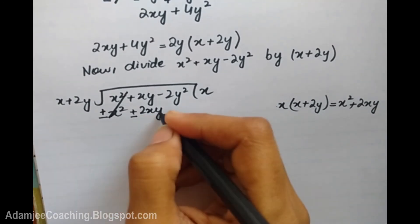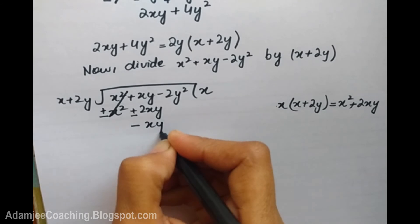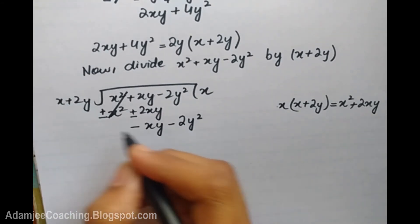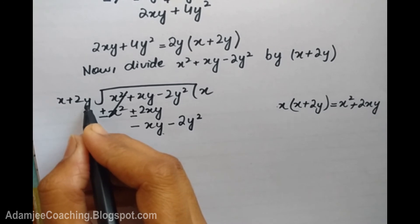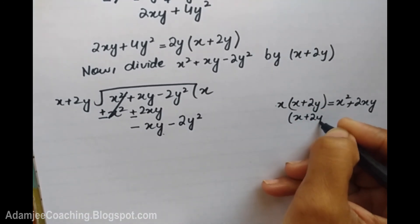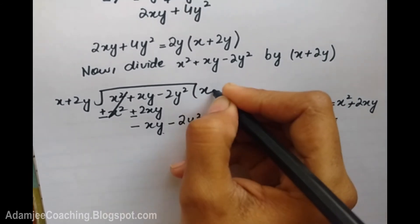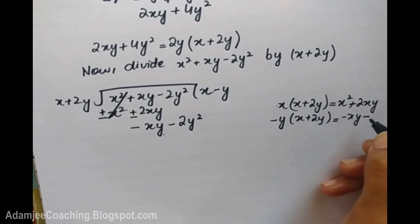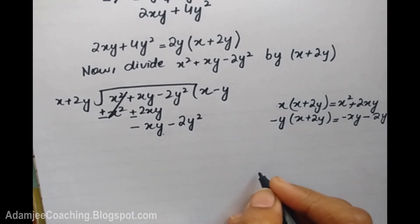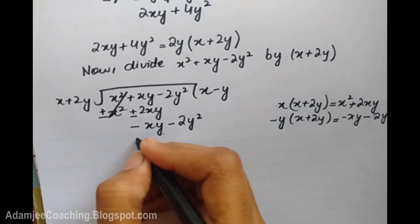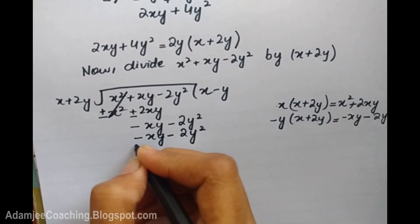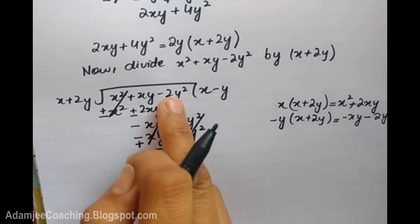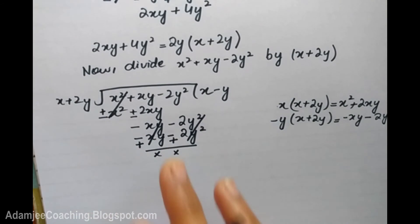After subtracting x² + 2xy from x² + xy, I get minus xy minus 2y². Now I divide minus xy minus 2y² by x + 2y, multiplying by minus y, giving minus xy minus 2y². The signs change: plus cancel, minus cancel — x + 2y divides x + 2y completely and cancels.